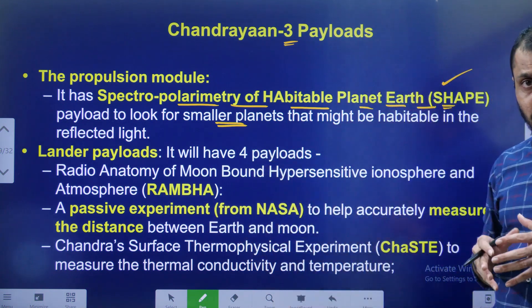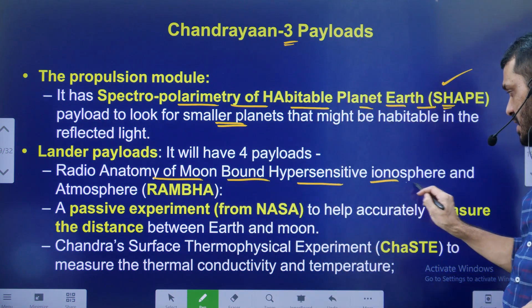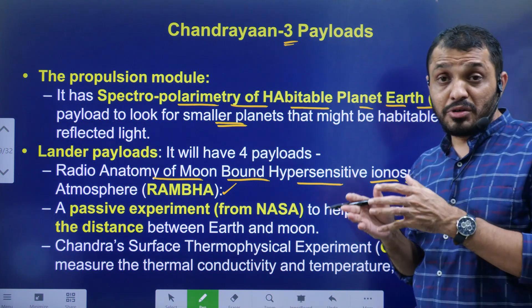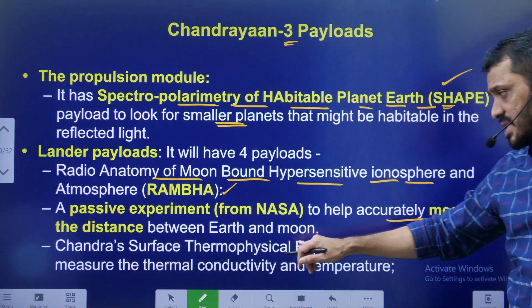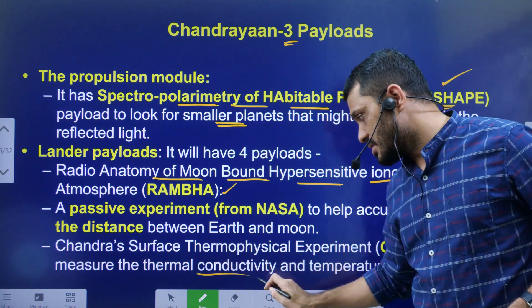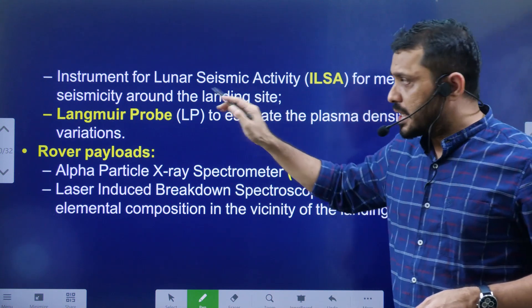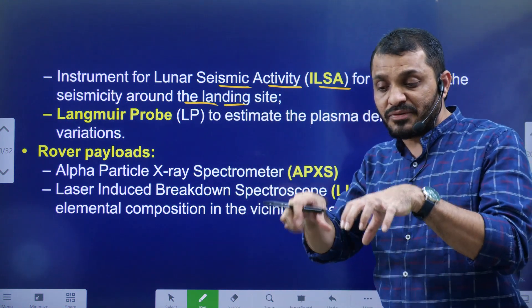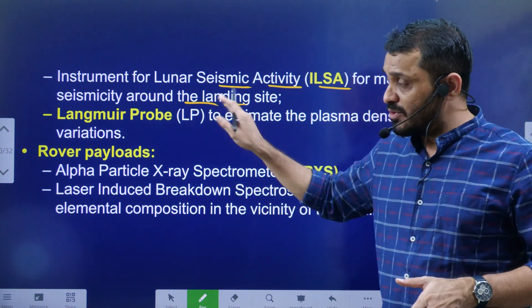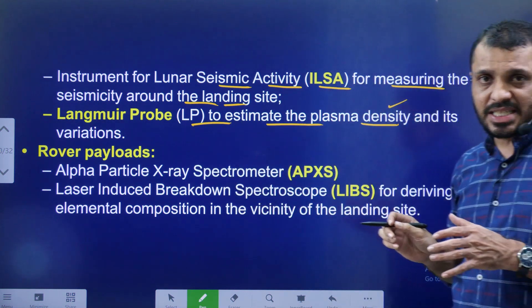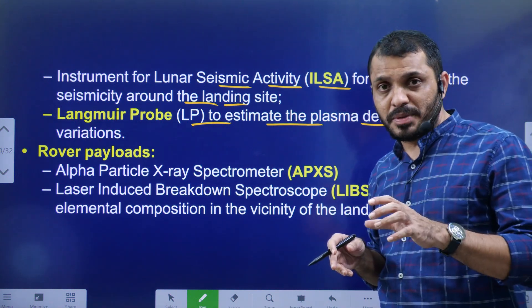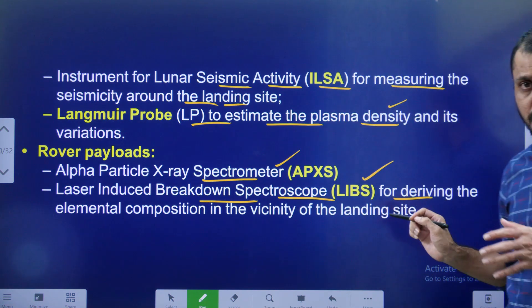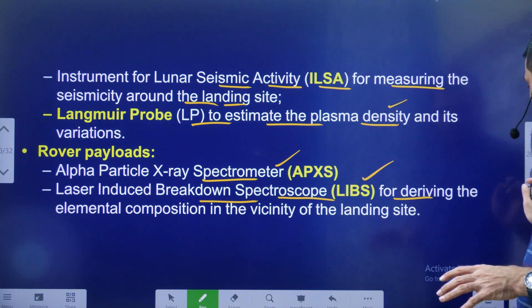Lander payloads — there are four payloads on the lander. First: RAMBHA — Radio Anatomy of Moon Bound Hypersensitive Ionosphere and Atmosphere. Second: a passive experiment from NASA that accurately measures the distance between the moon and Earth. Third: ChaSTE — Chandra's Surface Thermophysical Experiment — to measure thermal conductivity and temperature. Fourth: ILSA — Instrument for Lunar Seismic Activity — for measuring seismicity around the landing site, detecting how much seismic impact is created. There is also a Langmuir Probe to estimate plasma density on the moon's surface. Rover payloads: APXS — Alpha Particle X-ray Spectrometer — and LIBS — Laser Induced Breakdown Spectroscope.